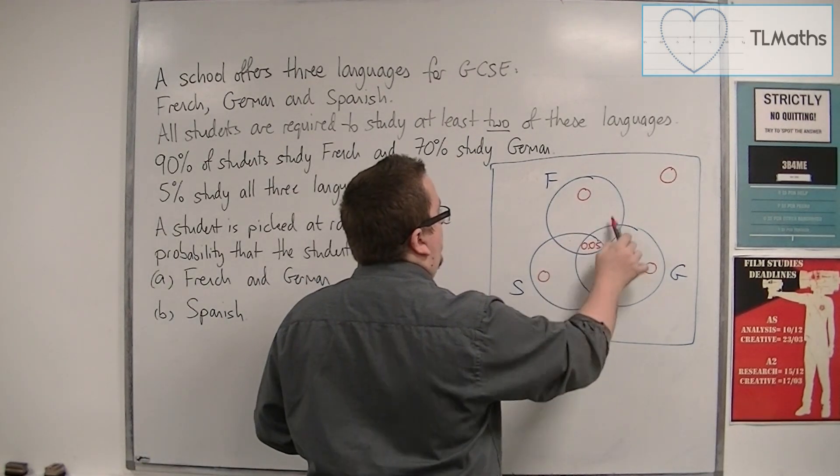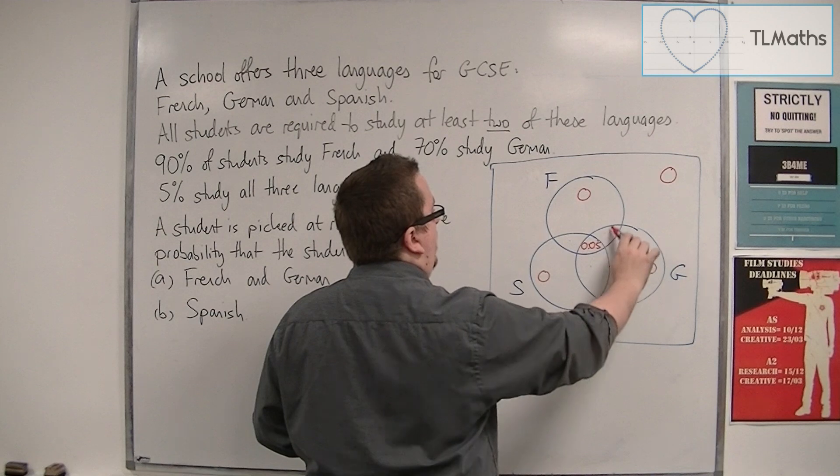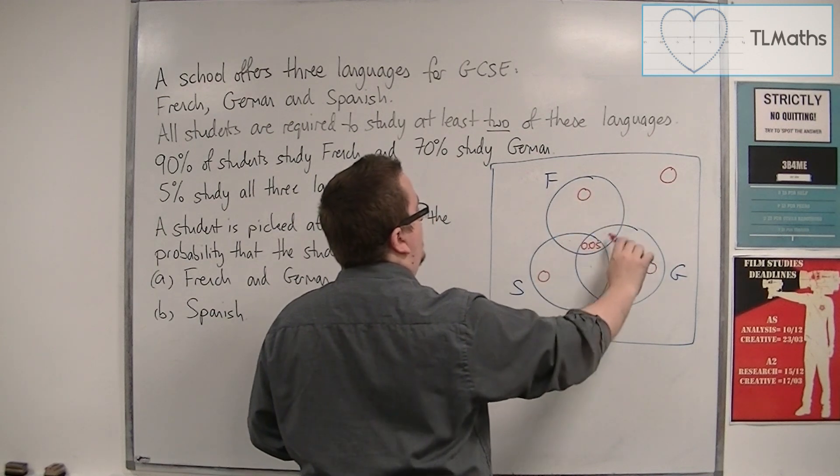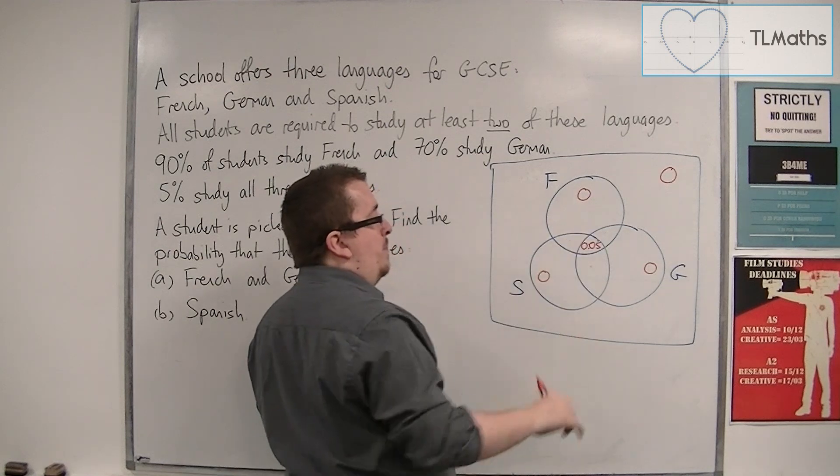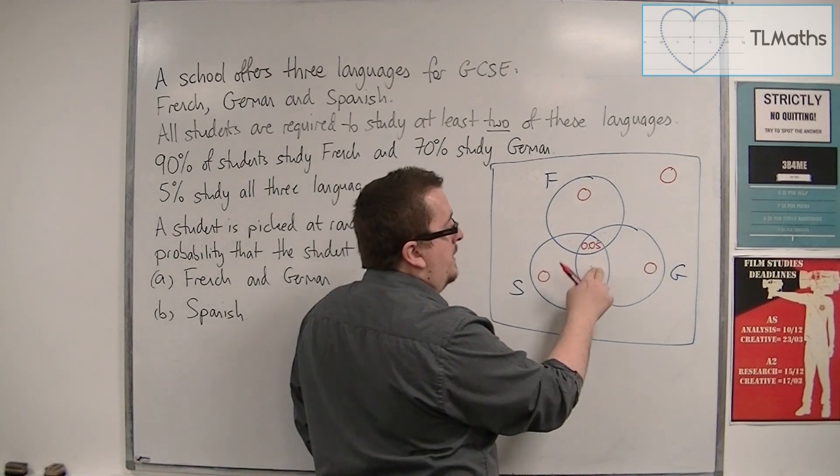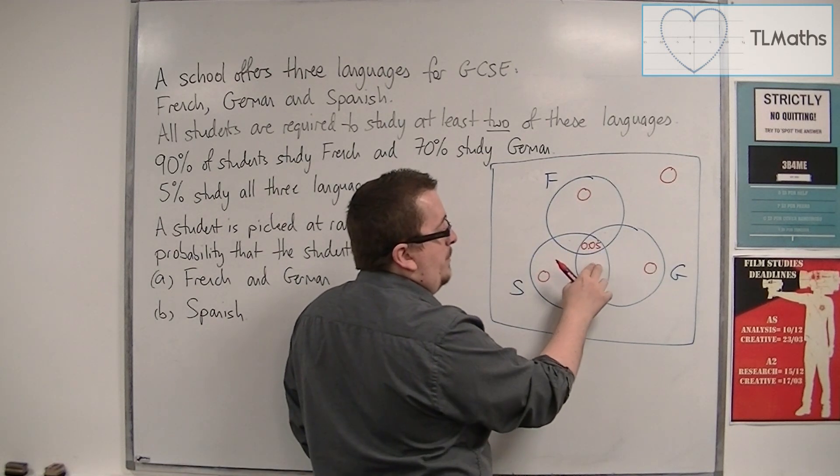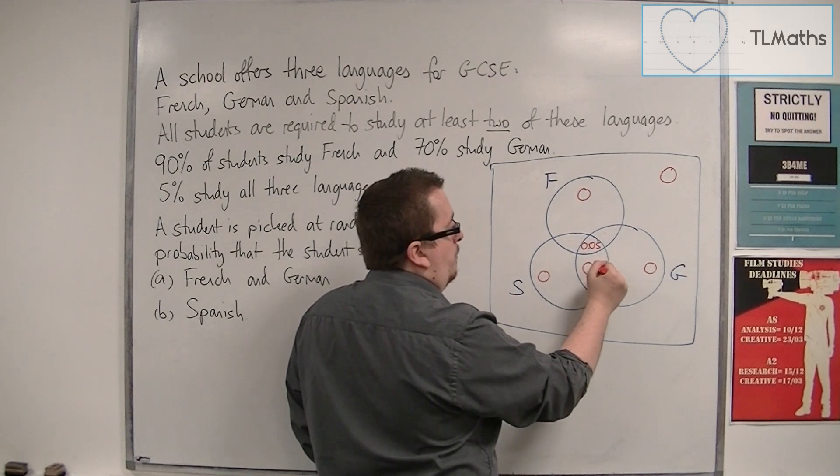then this whole circle must add up to 90%. And so what is left over, because there's no other place for students to go, must be the remaining 10%. So this is 0.1.